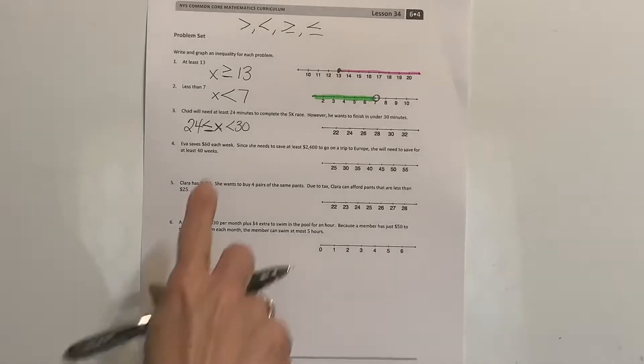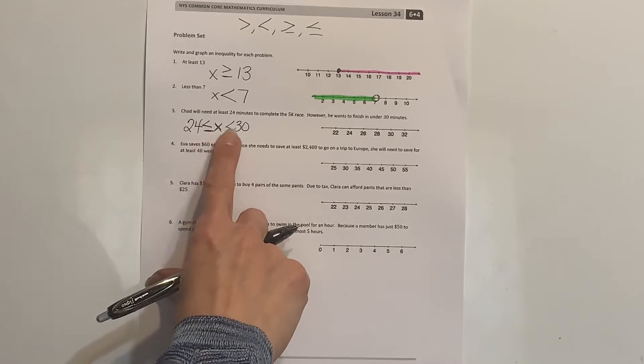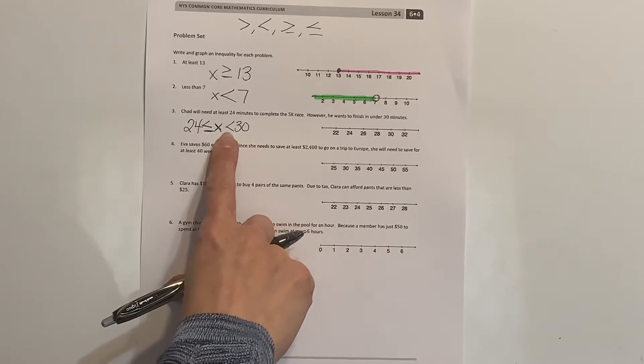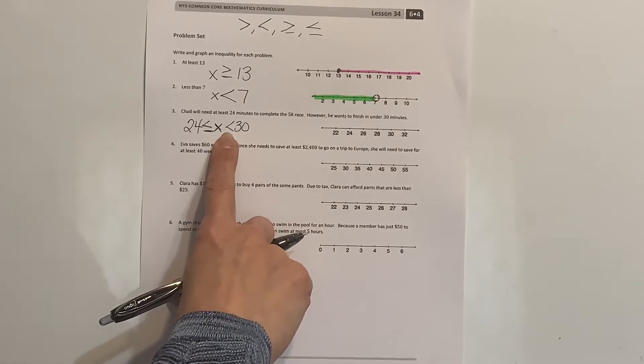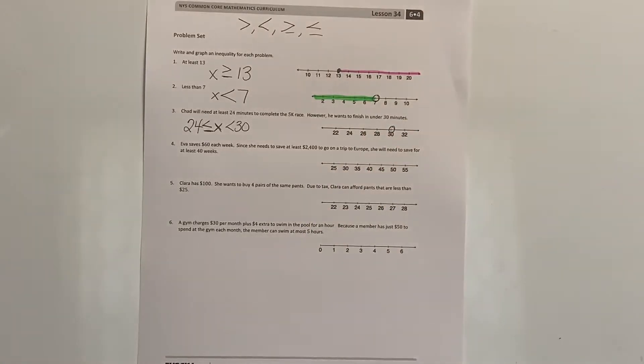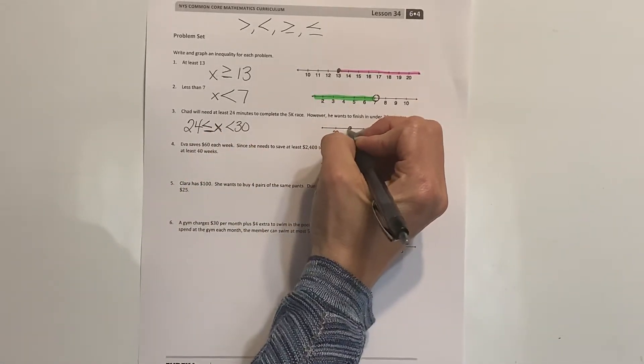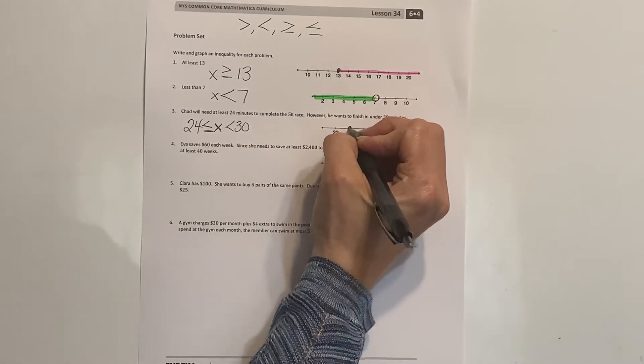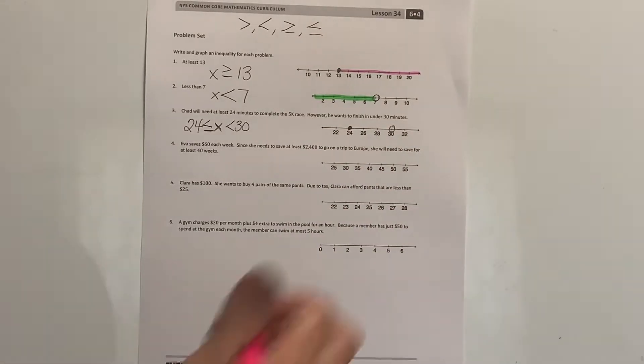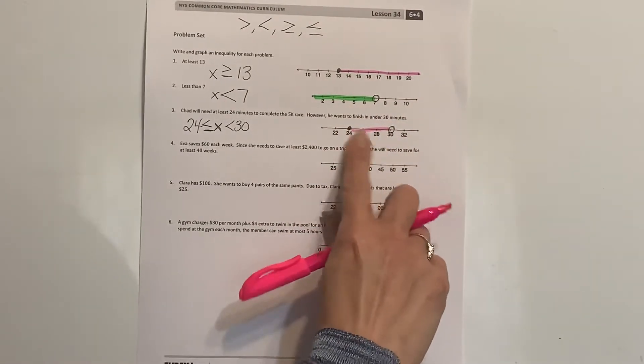That shows that Chad will be running for at least 24 minutes but less than 30 minutes. So does that include 30 minutes? Well, do we have an equal sign here? No, we don't, so that's going to be an open circle. Does it include 24 minutes? Yes, it does because it's less than or equal to. So there's our range, remember we were talking about your homework or a cake, those are all things when we have a range of time, so it's going to have to be in between those two values.